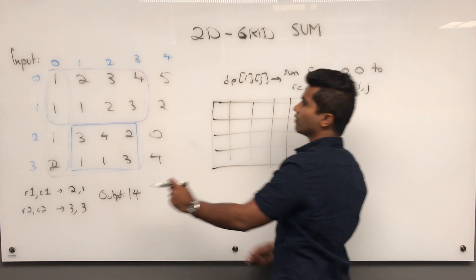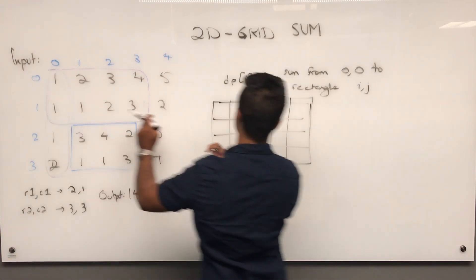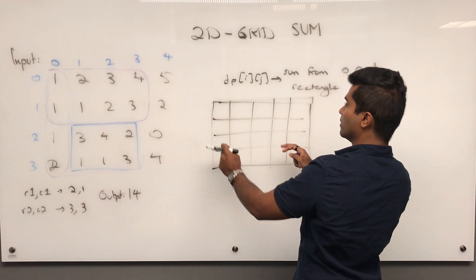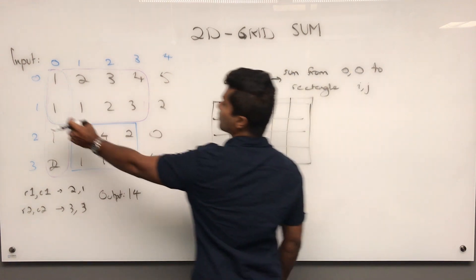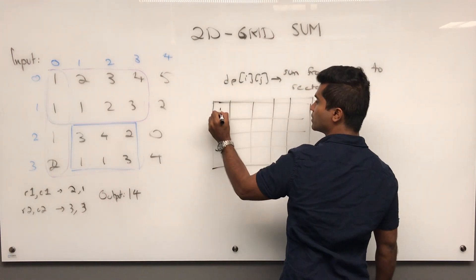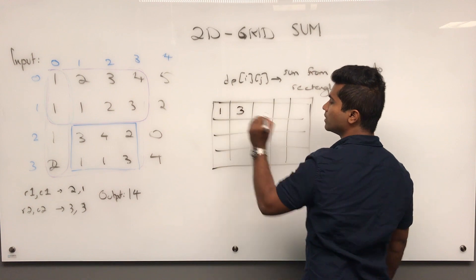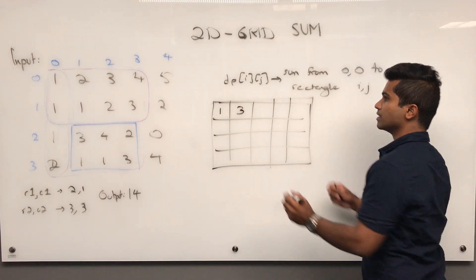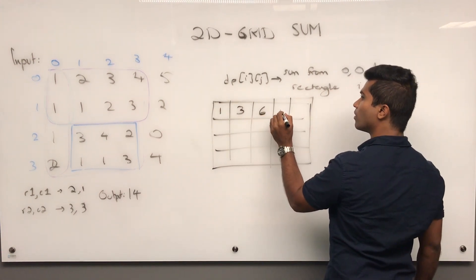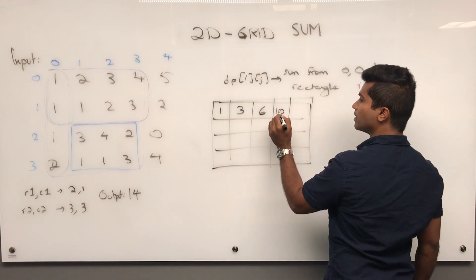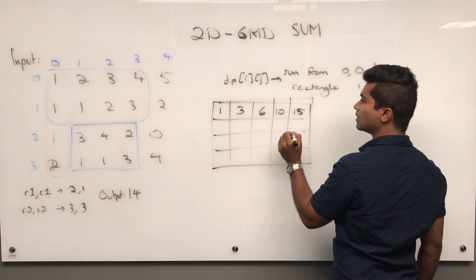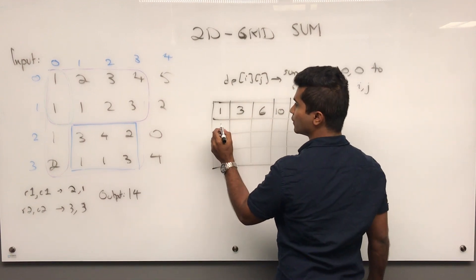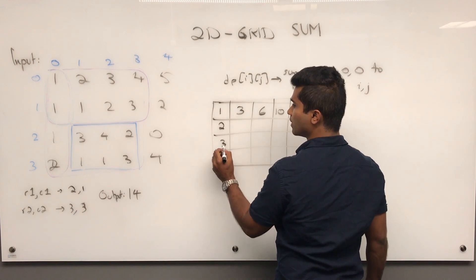So from here to here is going to be represented by this guy. So you'll understand as I write it. So from 0 to 0, it's going to be 1. So this is going to be 3. This is going to be 6, 6 plus 4, 10, 10 plus 5, 15. And then this down, 2, 3, 5.